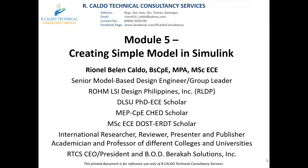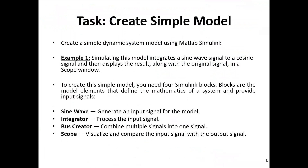For our fifth module, we'll be discussing creating a simple model in Simulink. We have two main tasks: one is creating a simple dynamic system model using MATLAB Simulink. For example number one, we're going to simulate a model that integrates a sine wave signal to a cosine signal and then displays the result along with the original signal in a scope window. To create this simple model, we need four Simulink blocks.